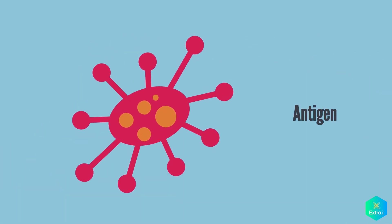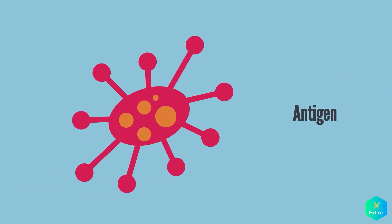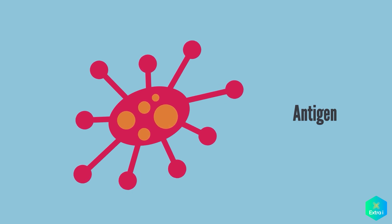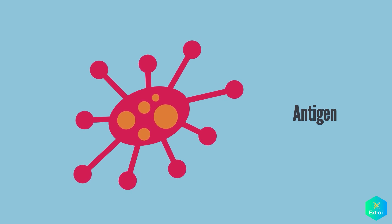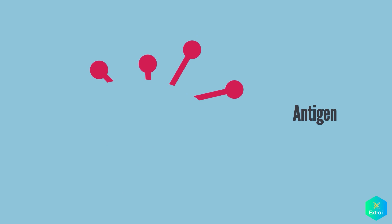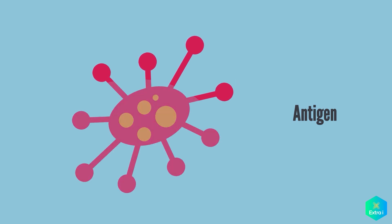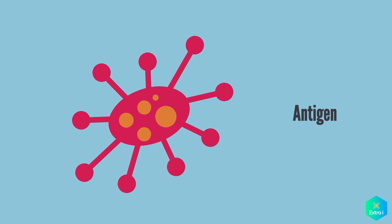Antigen. All vaccines contain an active component called the antigen, which generates the immune response from our body. This antigen may be a small part of the disease-causing organism, like a protein or sugar, or it may be the whole organism in a weakened or inactive state.